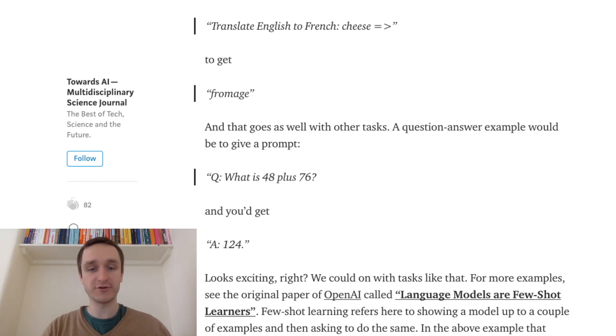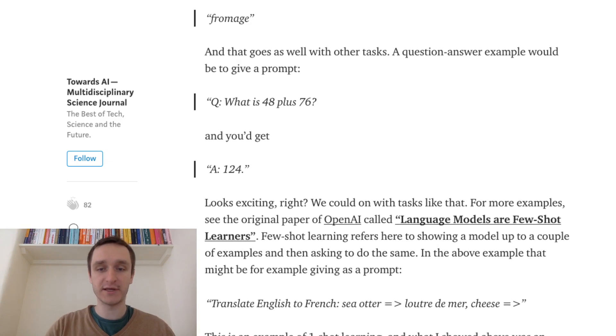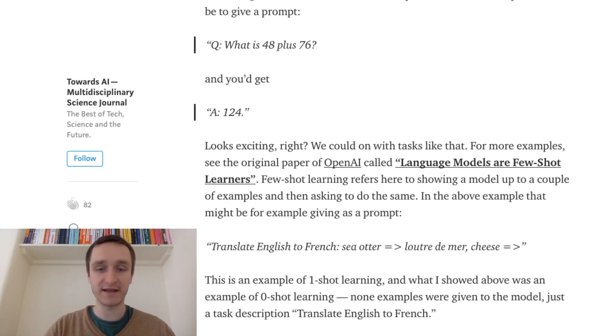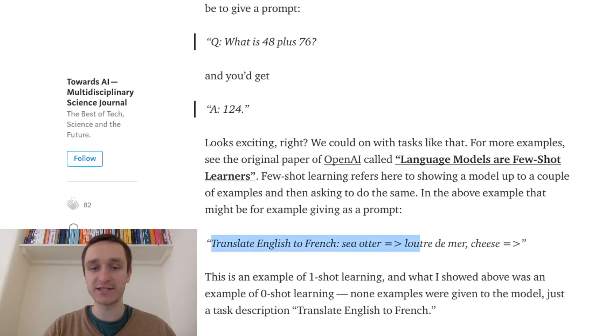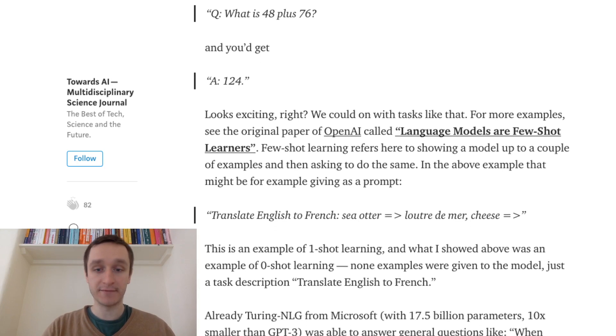The paper refers to few-shot learning because you can give a couple of examples to actually prompt the model in a good direction. So for example, you would give something like translate English to French, and then you give the example of sea otter translating to l'autre de mer. And then you give cheese and you expect that it will come back with fromage. So this is an example of one-shot learning because you gave one example.